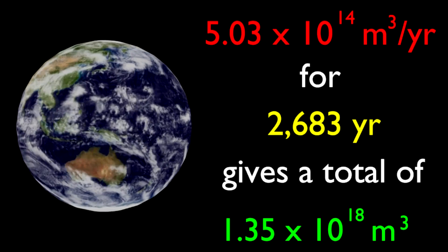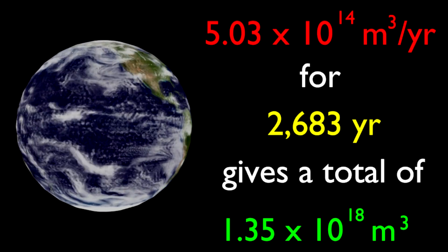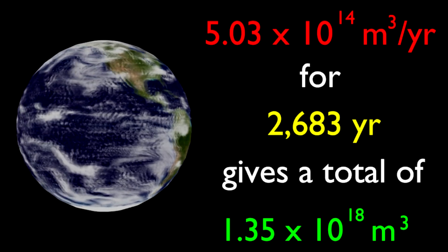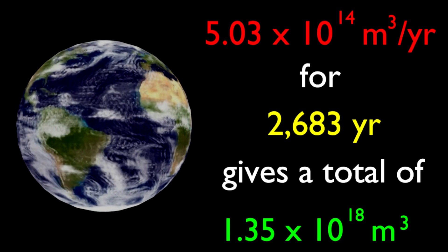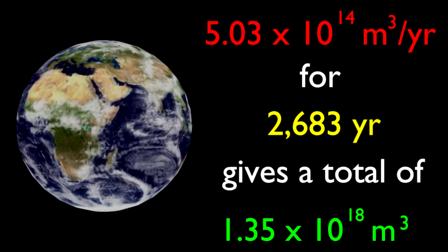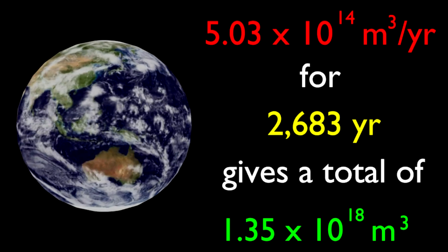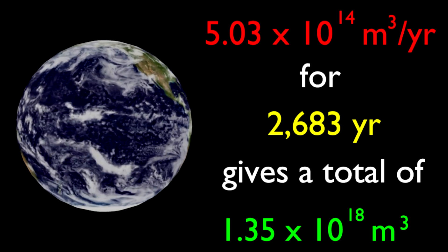Thus, the Earth is only 2,683 years old, because if there was no water in the oceans 2,683 years ago, and it rained 5.03 times 10 to the 14 cubic meters of water every year for 2,683 years, then there would be 1.35 times 10 to the 18 cubic meters of water in the oceans today. Exactly how much there is!